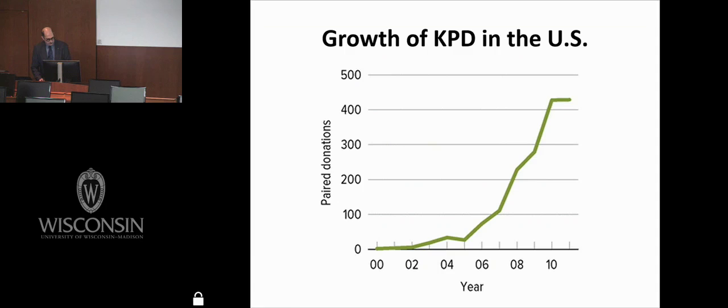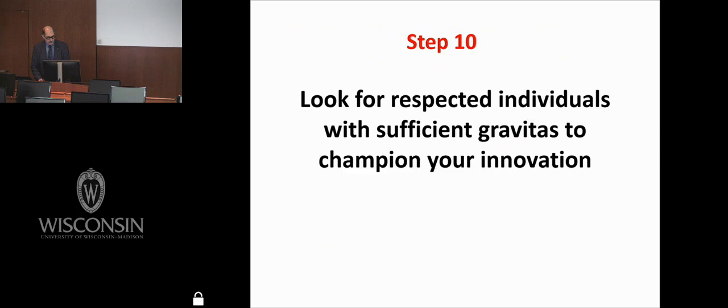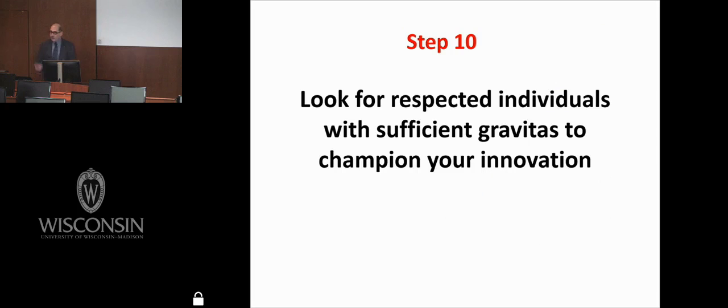If you still don't believe this about the sigmoid-shaped curve, here's the growth of kidney-paired donation or kidney swaps in the United States. This is from an article Ken Brayman from University of Virginia published showing the use of the Buckwalter retractor. Very reproducible, these sigmoid-shaped curves. So again, the question: how do you shorten that flat period to get these ideas out there?